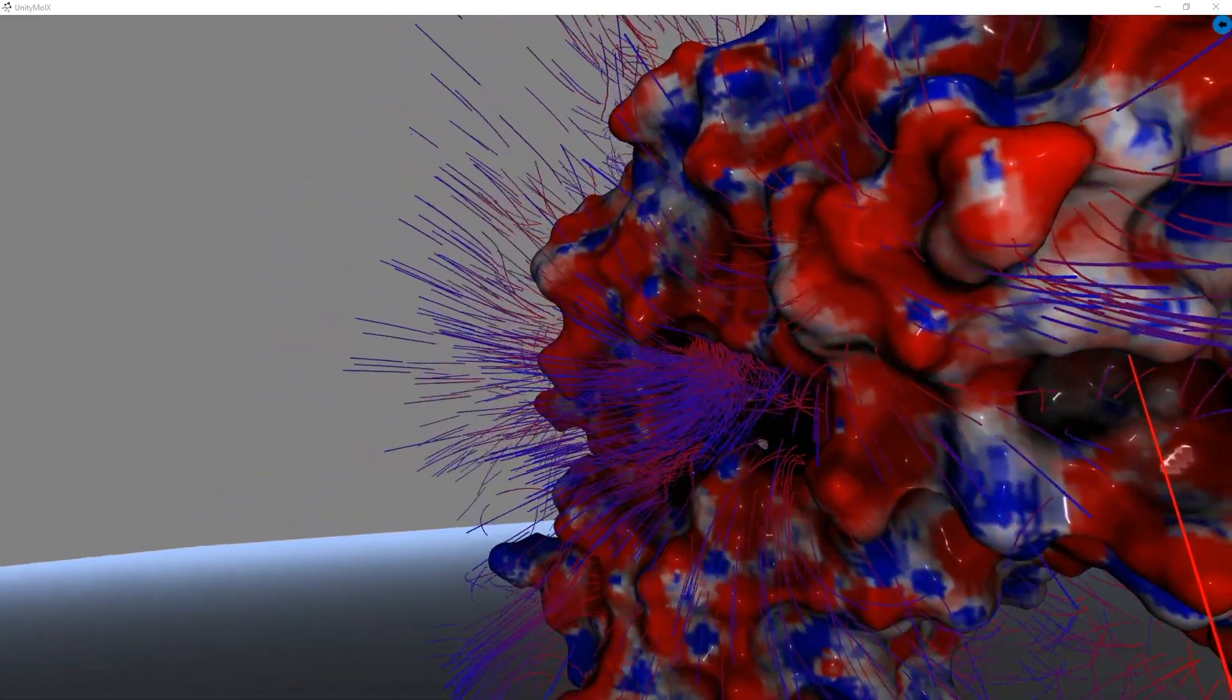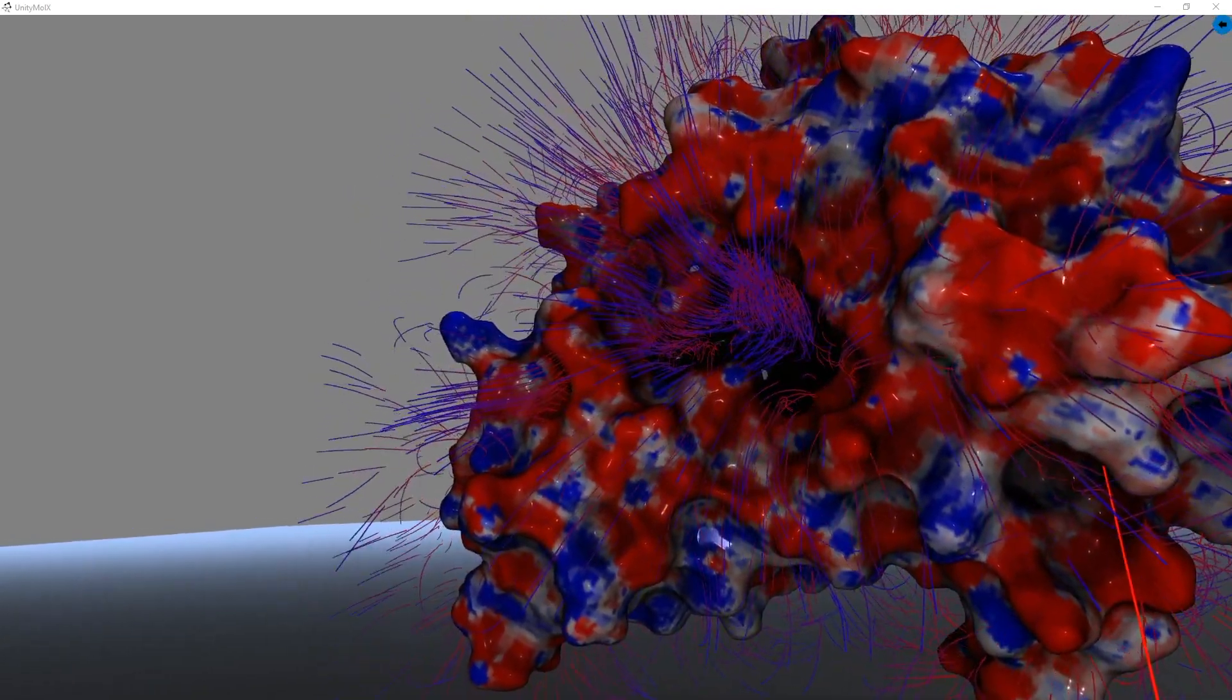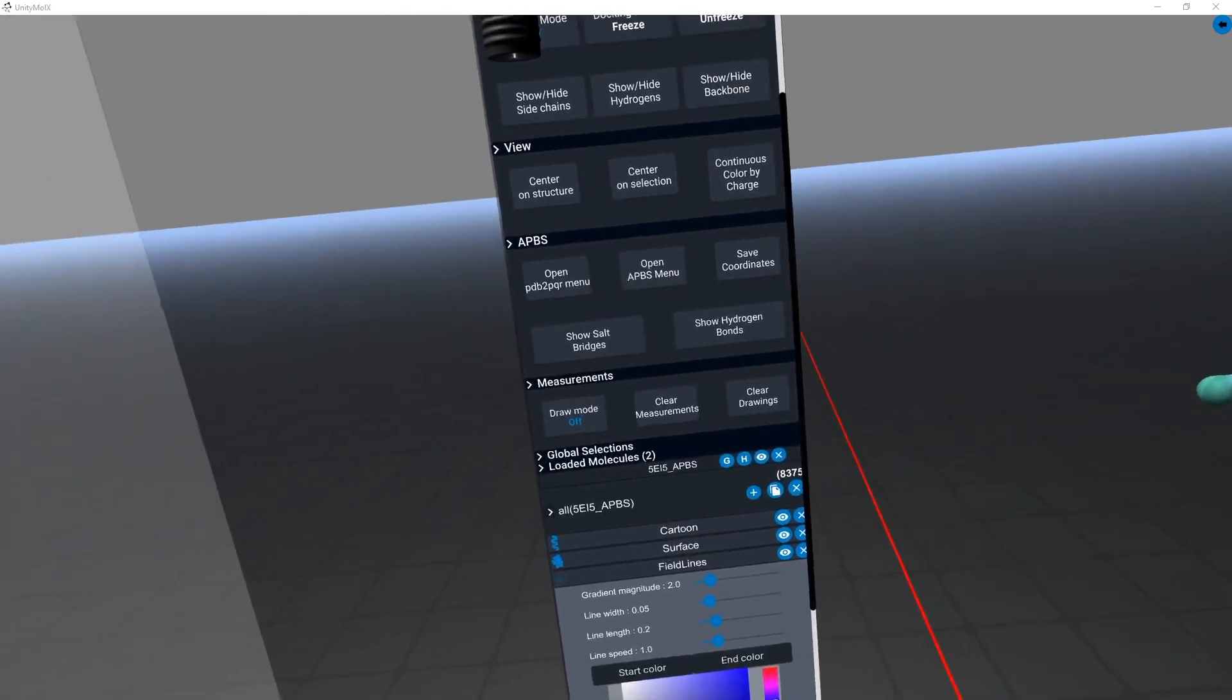As we then rotate the structure, we can more clearly see the electrostatic gradient pouring from the end of the catalytic gorge out into the solvent.